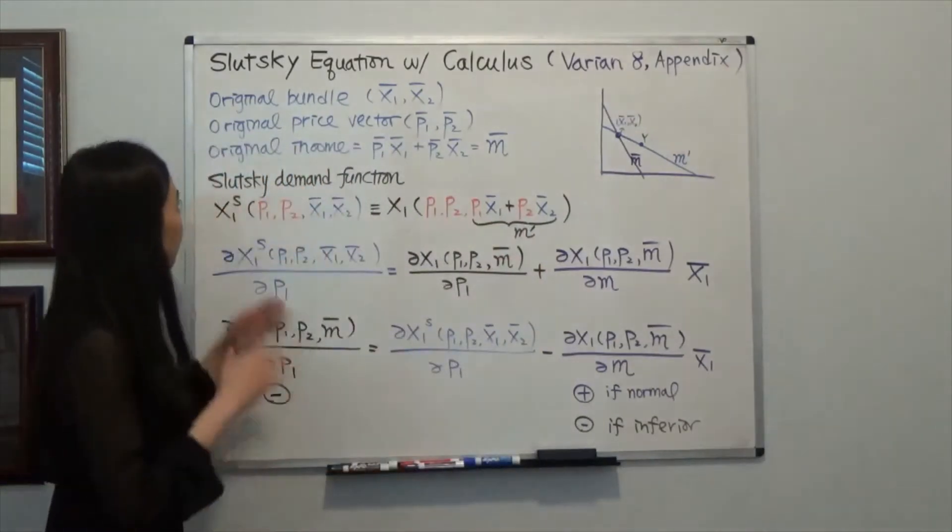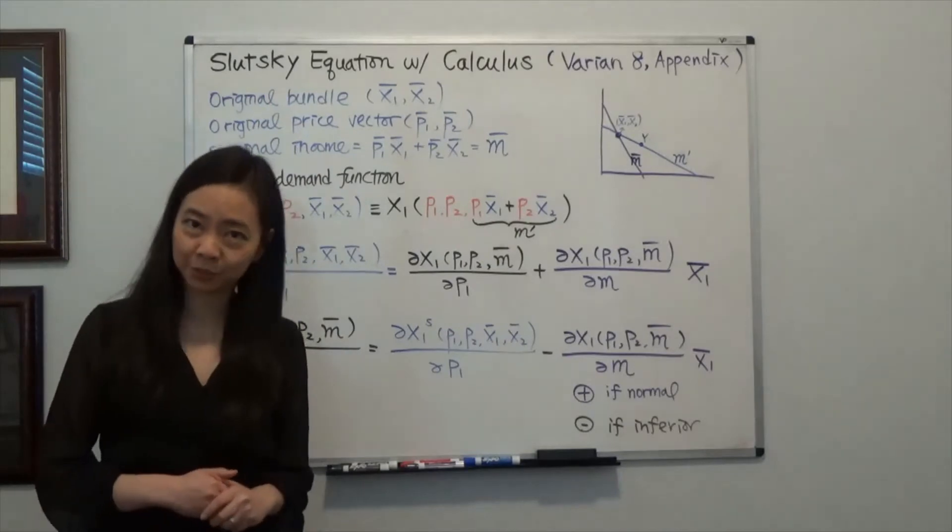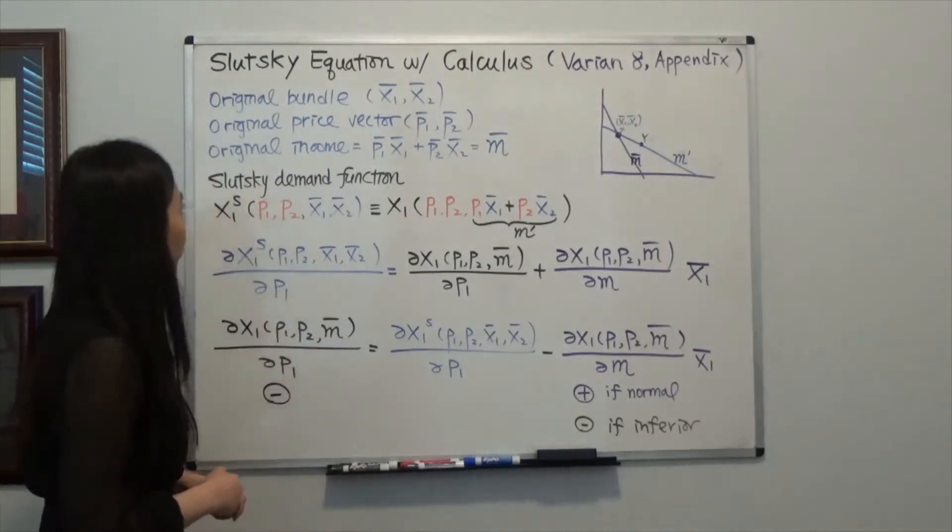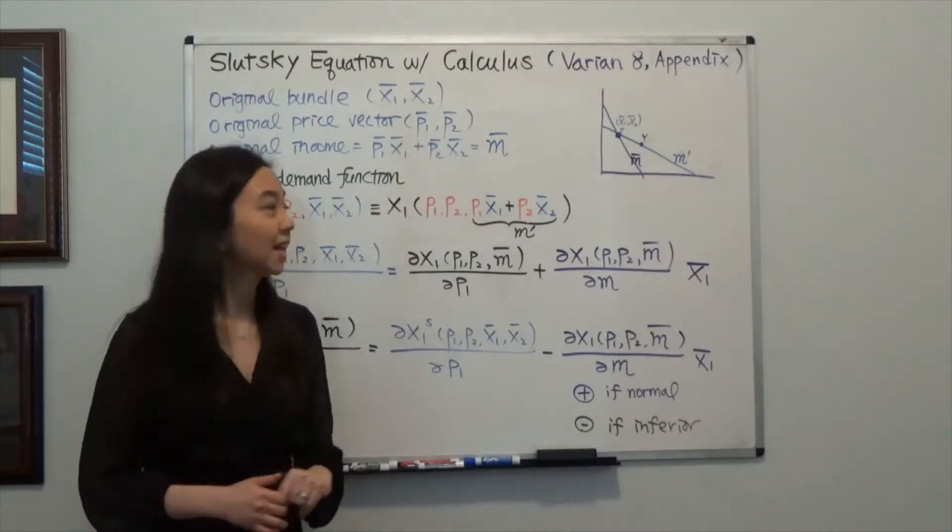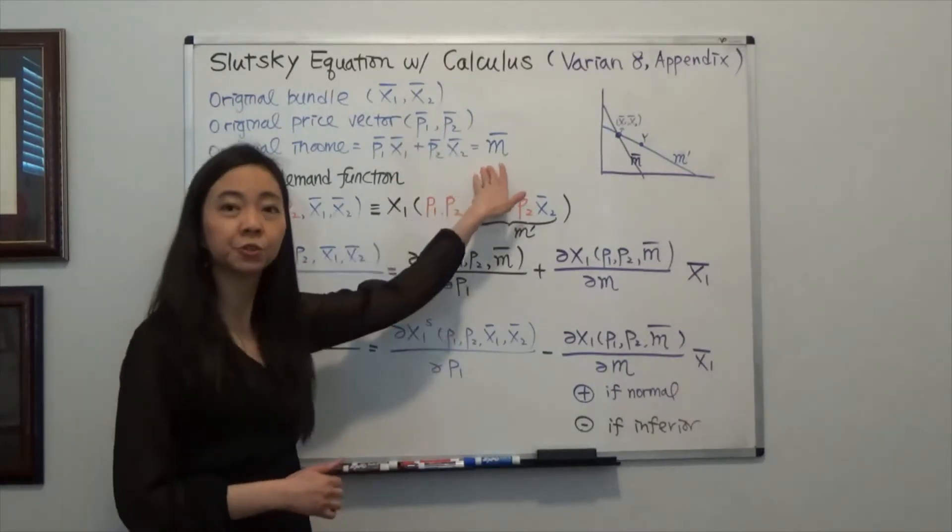So we know that initially we have original bundle x1 bar x2 bar and we have initial or original price vector p1 bar and p2 bar and this is our original income.